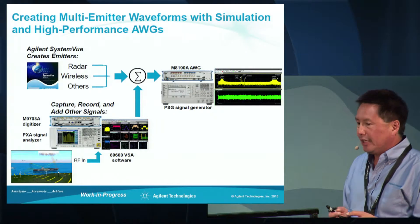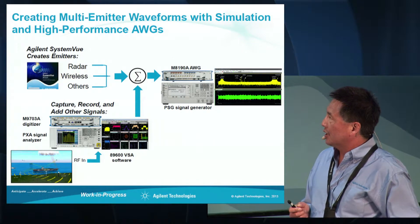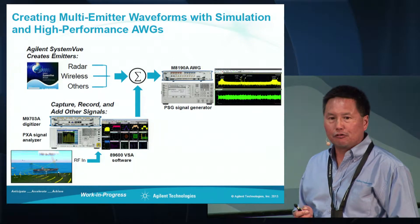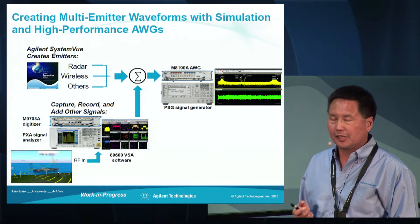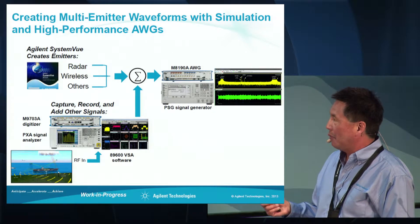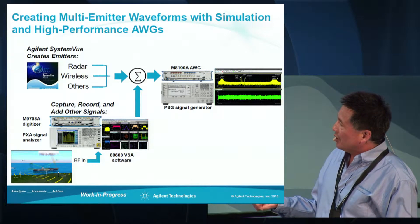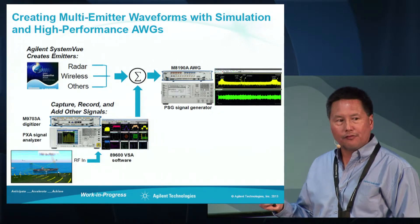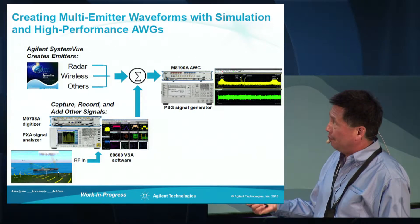What we'd like to show in this presentation is an approach to creating multi-emitter test signals — realistic test signals that can be a combination of radar and comm signals. This illustrates the flow we're going to be using.